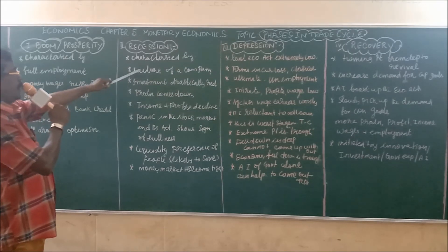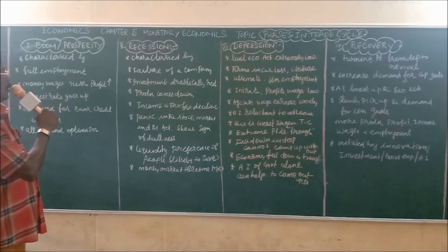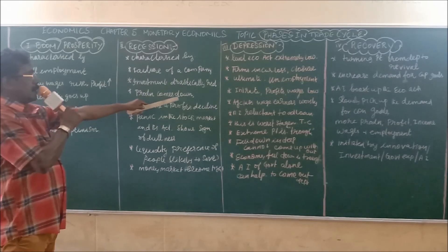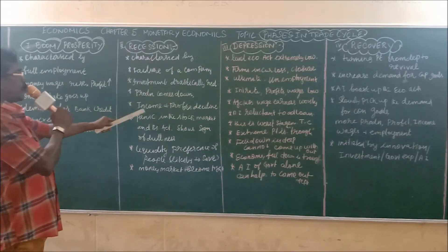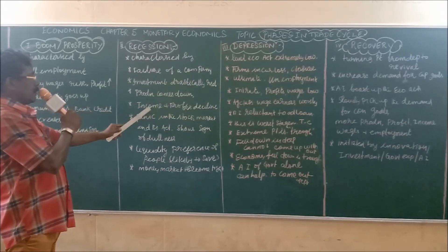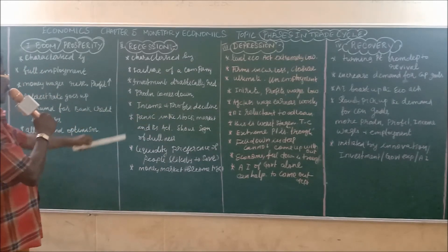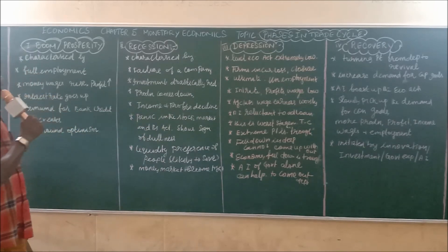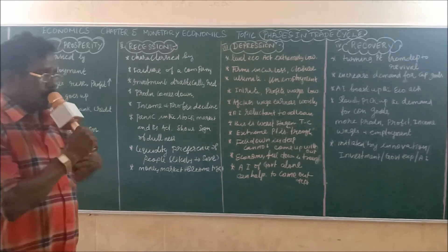In the recession stage, investments are drastically reduced. Once investment is reduced, automatically the level of production also comes down. Then income and profit also decline — once there is no production, the level of income and profit automatically declines. There is sudden fear in the stock market as well as business activities, and it shows signs of dullness.